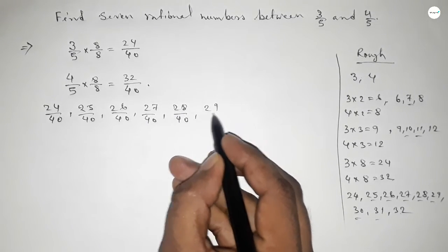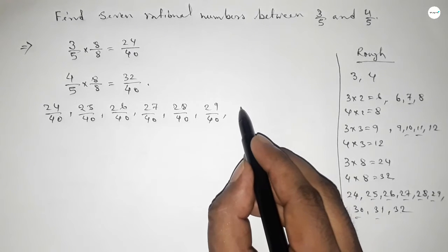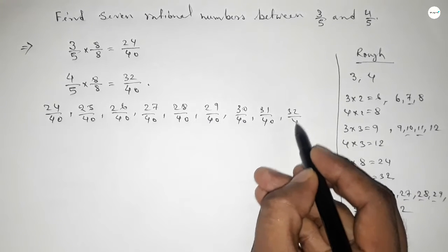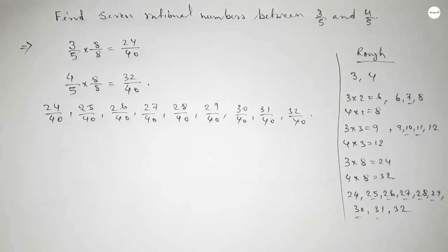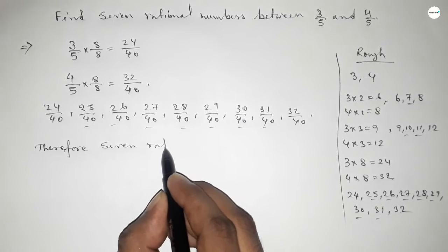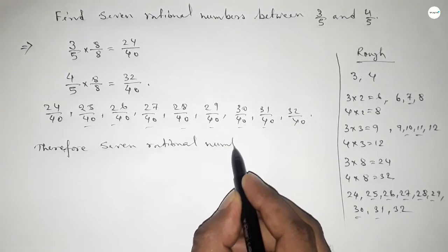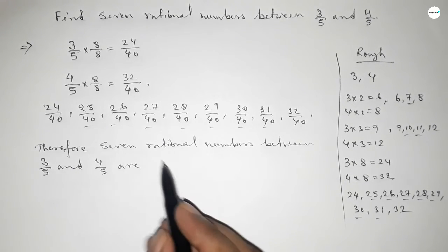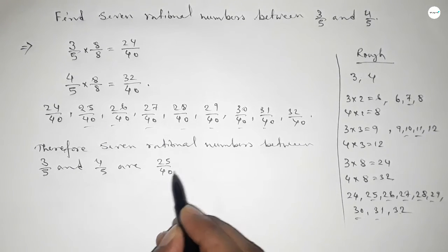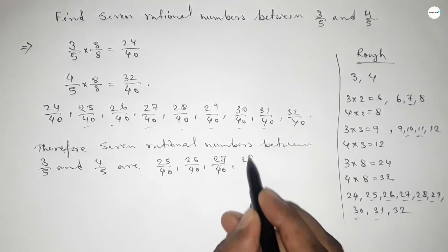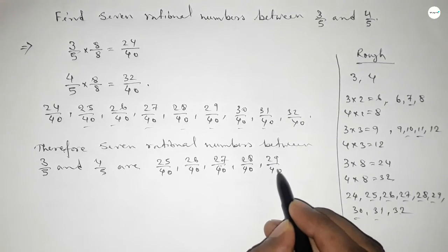All the rational numbers range from 24 over 40 to 32 over 40, and the required 7 rational numbers between 3 over 5 and 4 over 5 are: 25 over 40, 26 over 40, 27 over 40, 28 over 40, 29 over 40, 30 over 40, and 31 over 40.